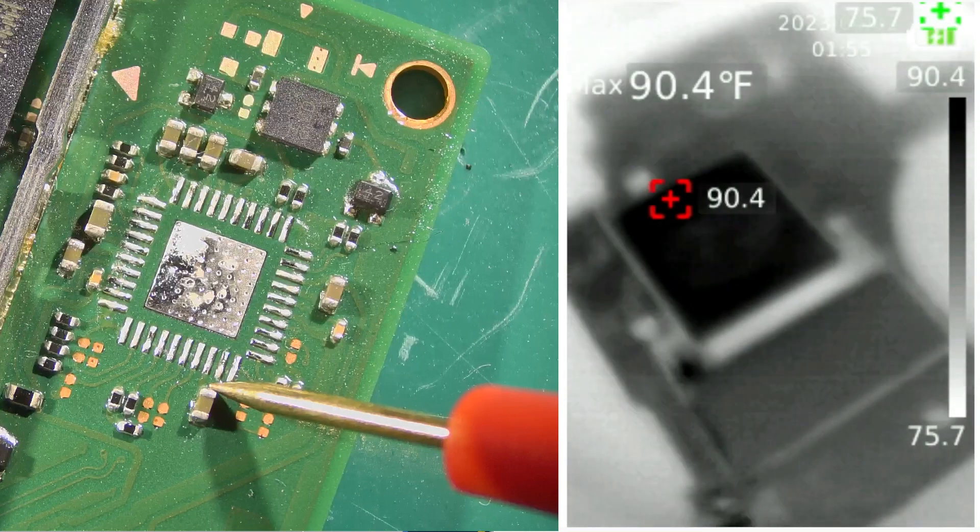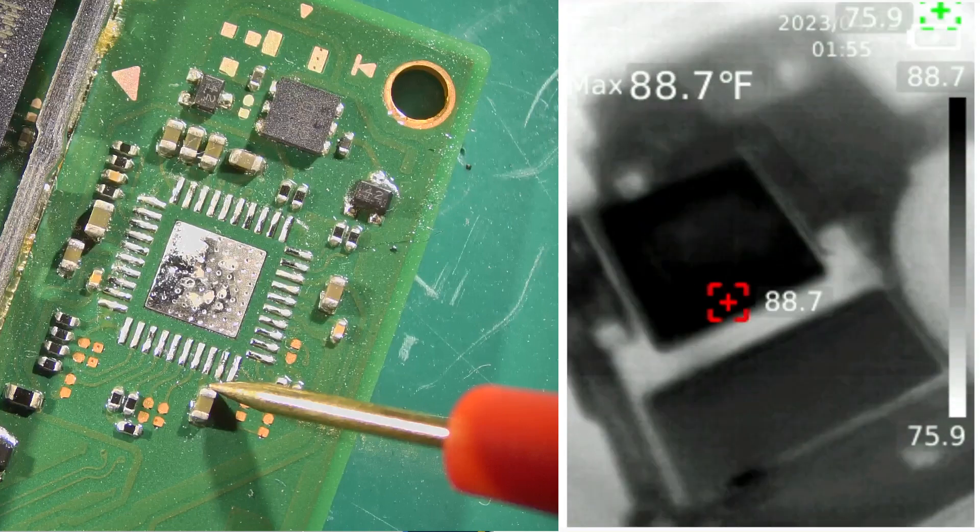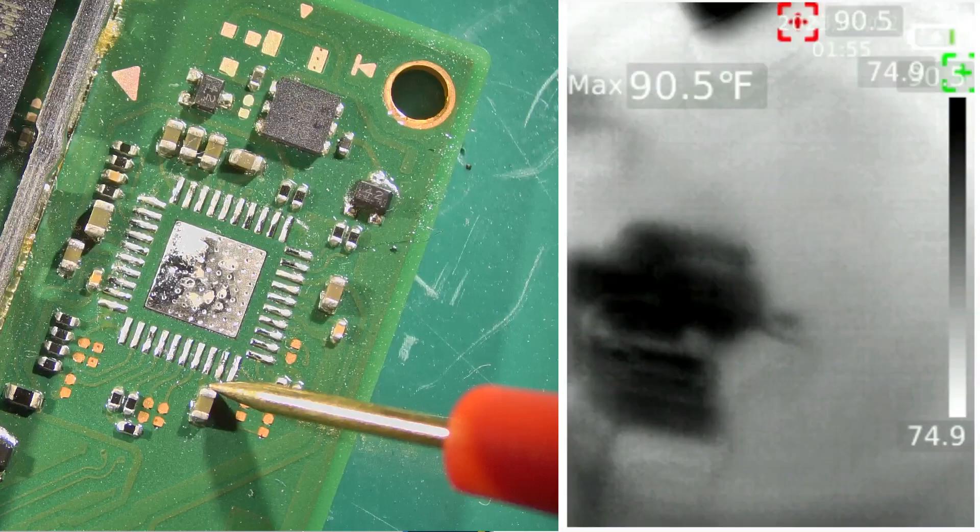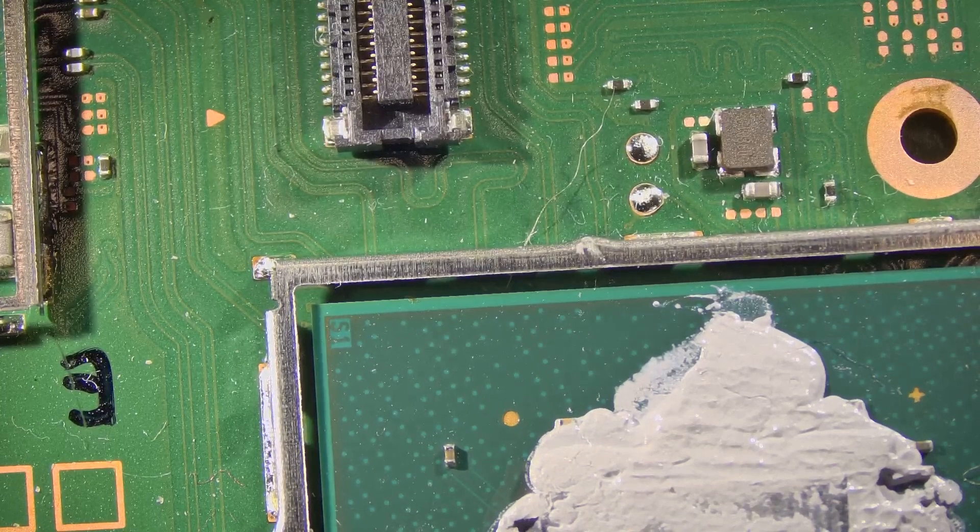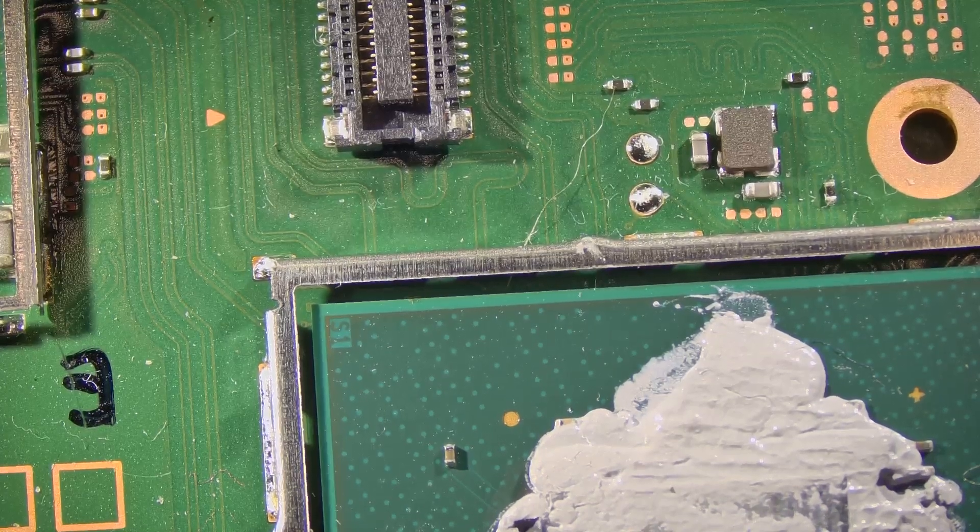So unfortunately we're not going to be able to fix this one, but just wanted to demonstrate the voltage injection. And that's the location on the CPU that was kind of showing the heat spot on the side there.